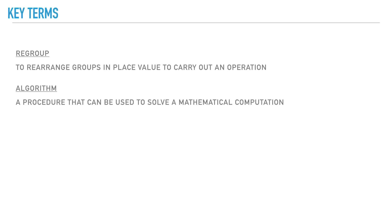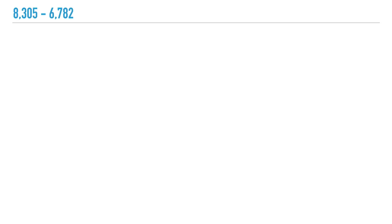We like to call an algorithm the old school way of doing math. So let's get right into our first problem. In this problem we're subtracting 6,782 from 8,305. The first thing we're going to need to do in order to solve this problem is line up our numbers based on their place value.